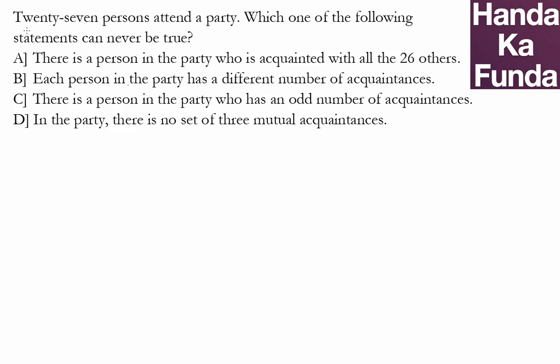In this question, we are given 27 people attend a party. Which of the following statements can never be true? For this kind of question, you can solve it two ways: by eliminating options, or by checking each option to see which one fits.